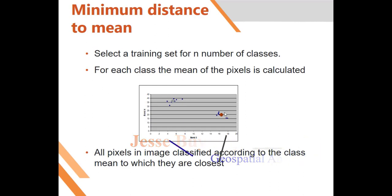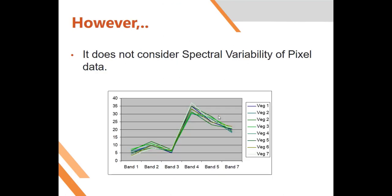The minimum distance to mean classifier works by selecting training pixels for each class, calculating a mean for each class, and plotting those means. Pixels nearest to a given mean are grouped into that class. An advantage is that all pixels in the image will be classified. However, it doesn't take into account the variability of the pixels since it only considers the mean.